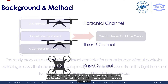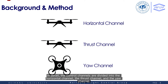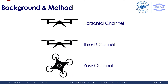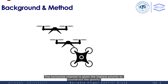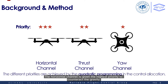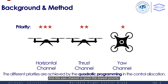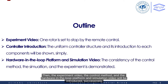In detail, the control channels are divided into the horizontal channel, the thrust channel, and the yaw channel. The horizontal channel is given the highest priority to counteract gravity, and the yaw channel is given the lowest priority. The different priorities are achieved by quadratic programming in the control allocation. Then the experiment video, the control method, and the hardware-in-the-loop platform and simulation video will be introduced successively.